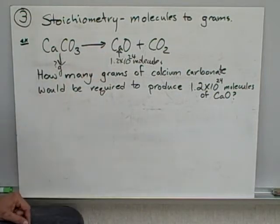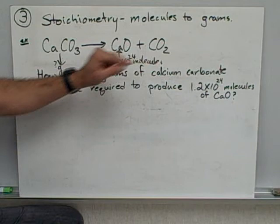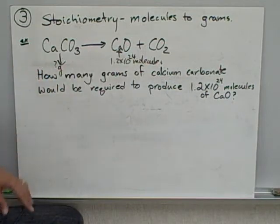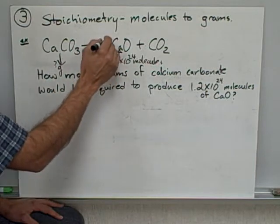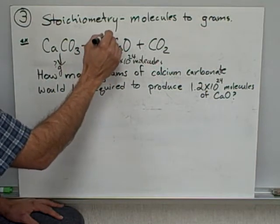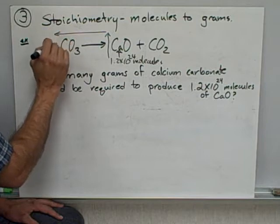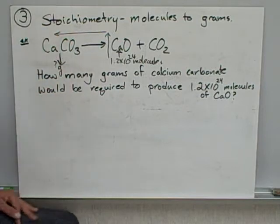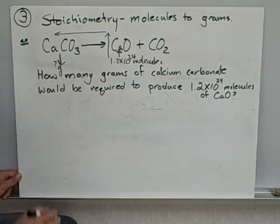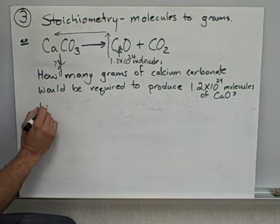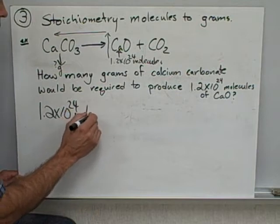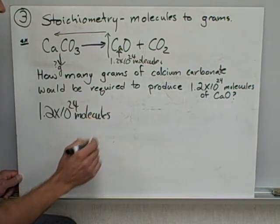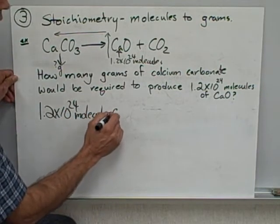Let's first see if it's balanced. Three O's, three O's, one calcium, we're good. I'm going to go from here to here, over and down. So step one up here, step two across, step three down, starting with what's given. 1.2 times 10 to the 24 molecules of calcium oxide.